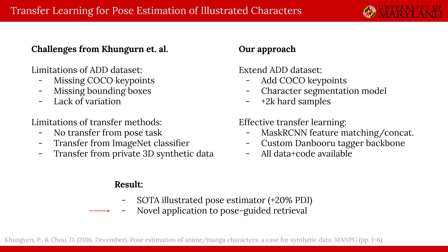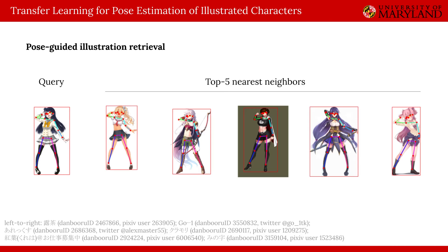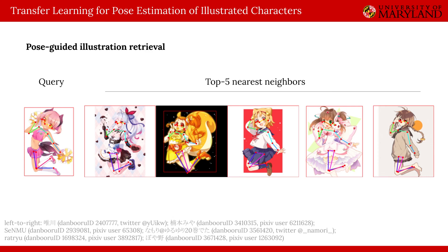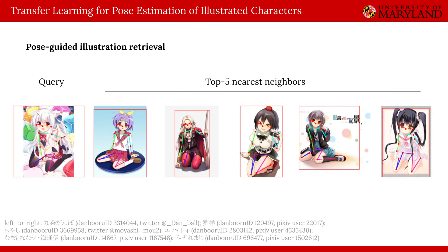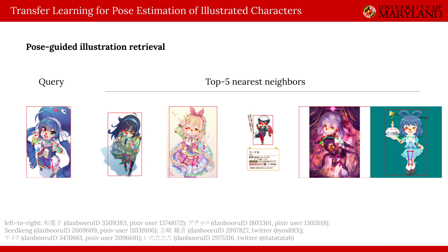Finally, we apply our state-of-the-art character pose estimator to the novel task of pose-guided illustration retrieval. Given a query image, we can extract its pose and find nearest neighbor images based on relative keypoint positions. This may be useful for artists who often search for reference materials when drawing difficult poses. Here we show a more complex jumping query. We can also find popular poses, such as the wariza or W-sitting position. While our system has no awareness of perspective, it is able to effectively leverage keypoint cues to retrieve similarly foreshortened views in this example.